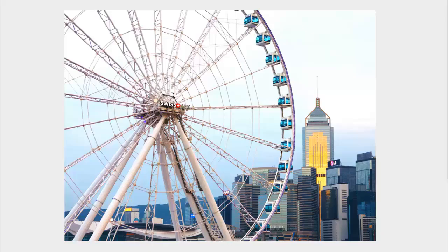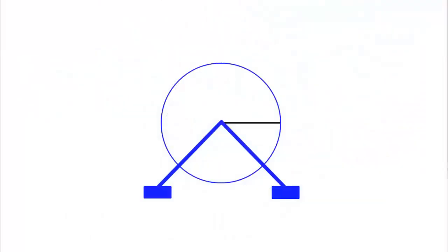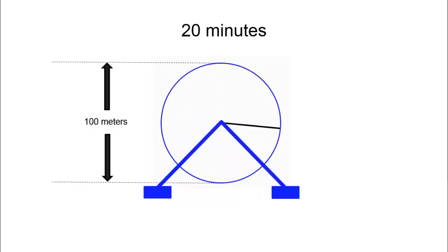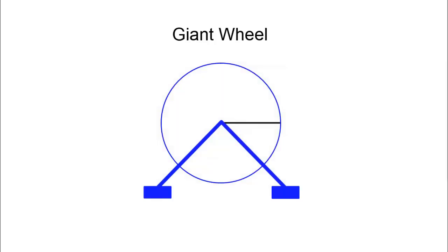Now that you understand slope, let's go back to our giant wheel. Here it is, and it takes 20 minutes to complete one rotation. And let's suppose it's 100 meters in diameter. Now before it starts, what if I ask you, what's the slope of the black line? You've just learned that the flat or horizontal line slope is always 0. There's the answer.